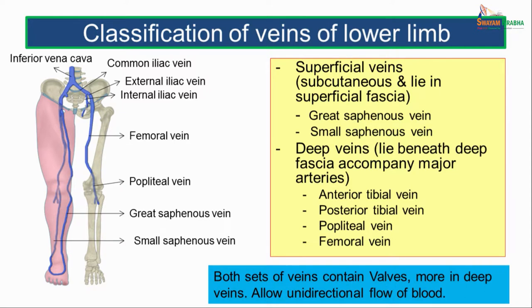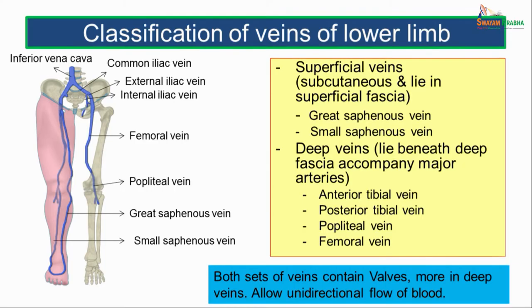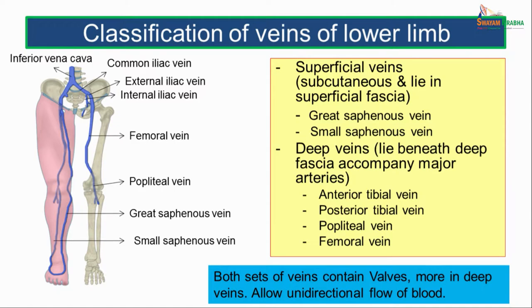The deep veins lie beneath the deep fascia and accompany the major arteries. The deep veins below the knee are seen as venae comitantes — a pair accompanying the arteries — whereas above the knee joint they are single named veins, for example the anterior tibial vein, posterior tibial vein, popliteal vein, and femoral vein. Both sets of veins contain valves. More valves are seen in the deep veins compared to the superficial veins, and these valves allow unidirectional flow of blood.